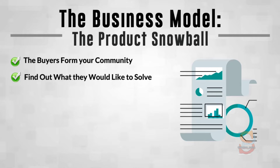Find out what they'd like to solve. Even if one person answers — let's say you put out an email and you've got ten people on your list and one person responds — with these little short products where you're solving problems, just solve that problem and launch the product on Warrior Plus. The product snowball works because you continue to build this community of people who have bought your products.